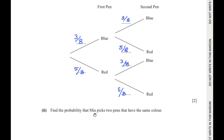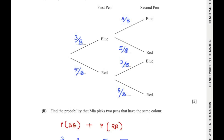Find the probability that Mia picks two pens that have the same color. The probability of getting two pens of the same color could be blue and blue, or red and red.